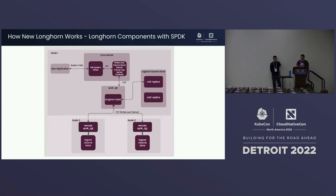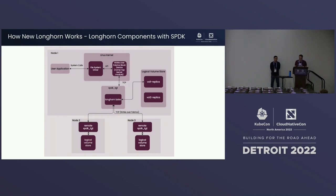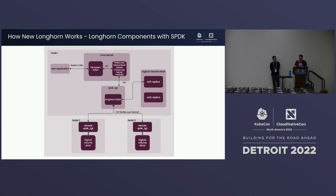The architecture diagram shows a volume with three replicas using SPDK. The user application interfaces with the filesystem driver and kernel, which uses an NVMe over Fabrics block device. The kernel directly communicates with the SPDK process — called SPDK TGT — which contains the special Longhorn block device (bdev). This bdev has one local replica and two remote replicas, each containing a logical volume store for the particular volume.